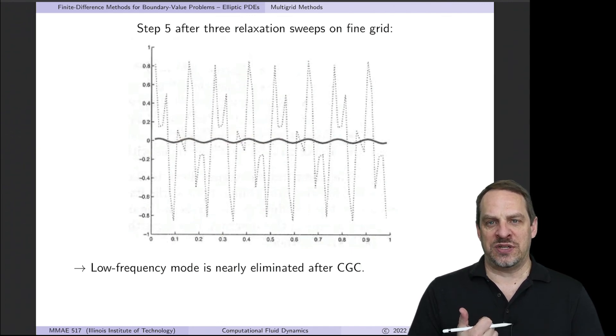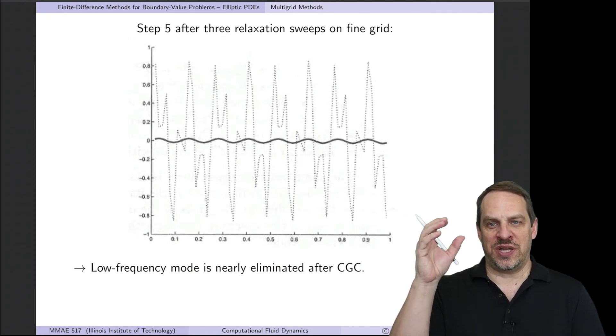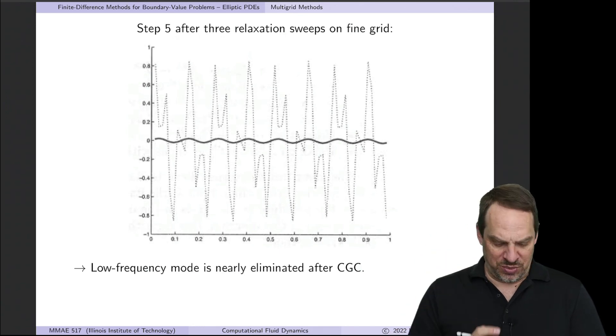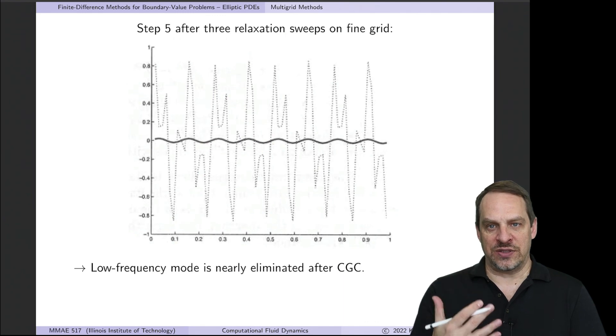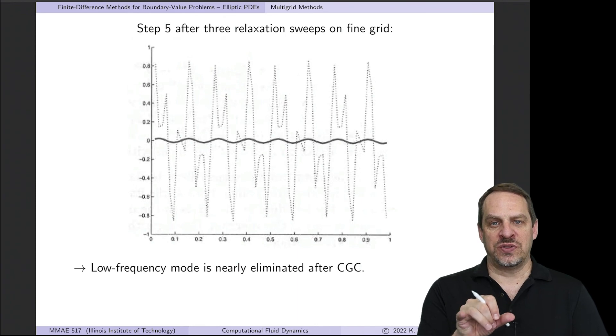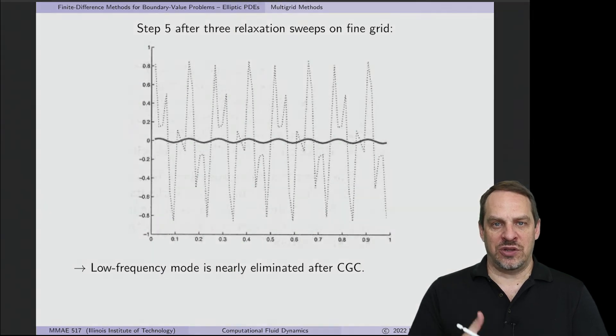Then if we in step five relax three additional times, you'll see that the error gets reduced even further. So if you count up the total number of relaxation sweeps, it was three plus three plus three, so that's nine. If we were just to have done nine relaxation sweeps on the fine grid using Gauss-Seidel, for example, we would be nowhere near this small of an error at this stage. In addition, all the work that's being done on the coarse grid, you only have half as many intervals, so it requires much less computational time as well. So you can see how this is accelerating the iterative process.